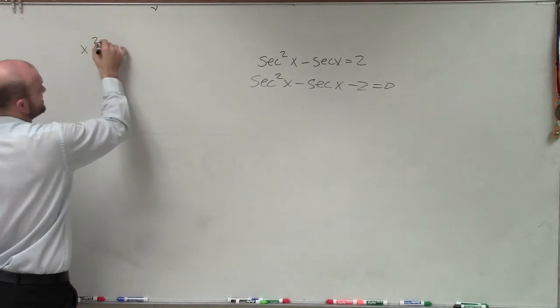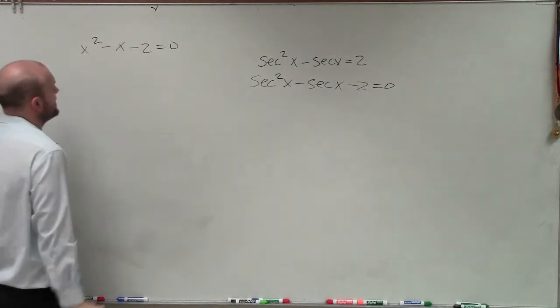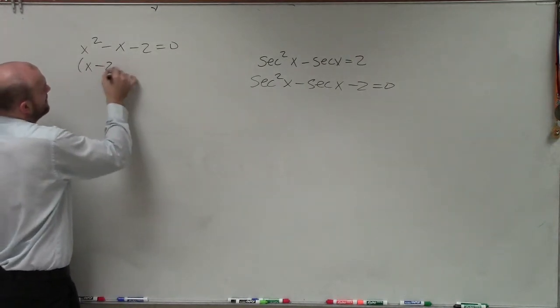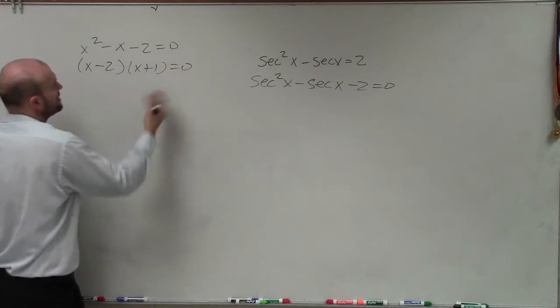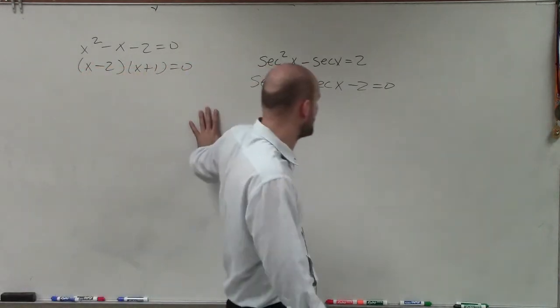So to factor this, I'm going to forget about secant for a second. And I'm just going to look at this and say, how would I factor x squared minus x minus 2 equals 0? Well, this one's not that bad. So I'm going to do it very quickly. And now you can set up the 0 product property.